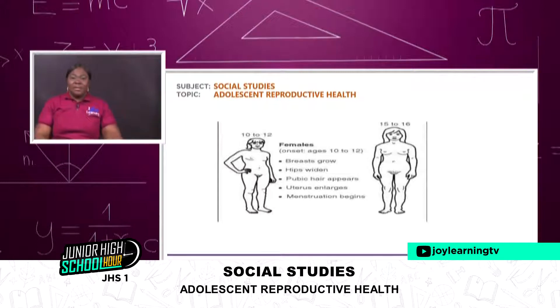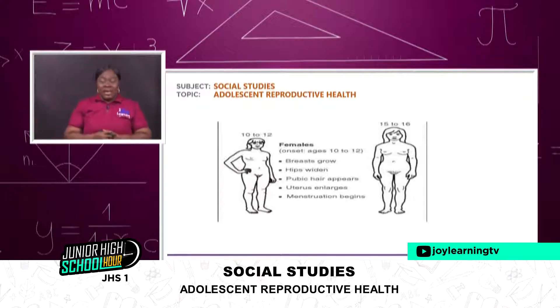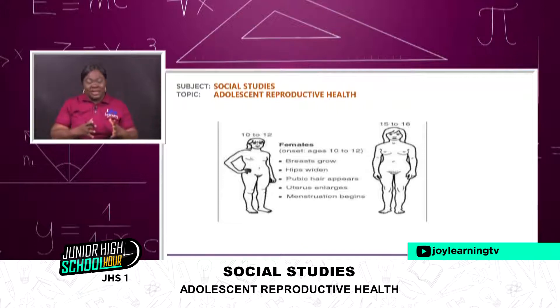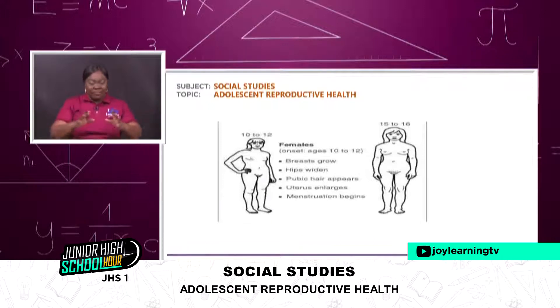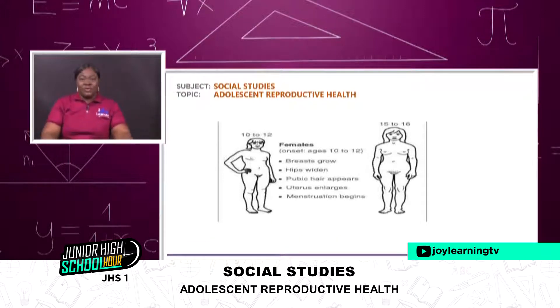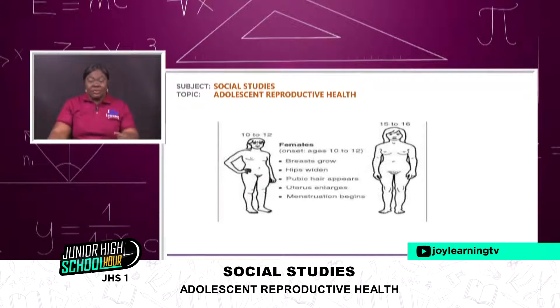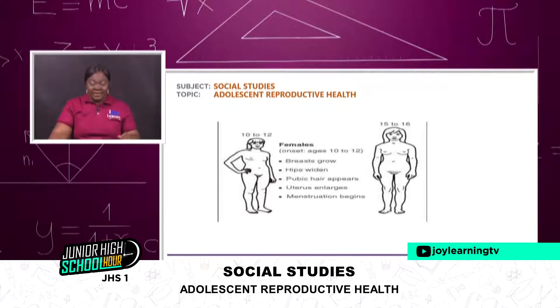There's another picture on your screen. This one also depicts the transition of a female adolescent from the age of 10 years to 19 years. So you can see that the female onset starts from 10 to 12 years. You can see breast grows, hip widens, pubic hair appears, uterus enlarges, and then menstruation begins.